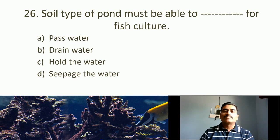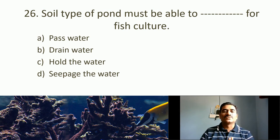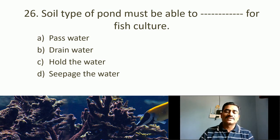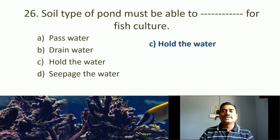Twenty-sixth MCQ: Soil type of a pond must be able to do what for fish culture? Options: pass water, drain water, hold water, seep water. If soil passes or drains water, more expenditure is needed for refilling. For fish culture, soil should be able to hold the water. The correct answer is hold the water.